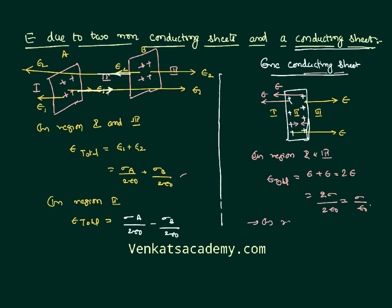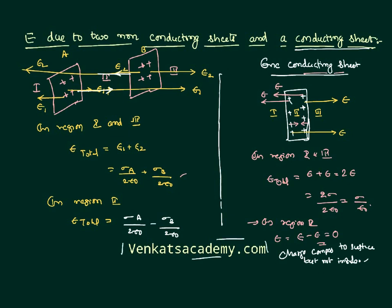In region 2 the field is zero, meaning there is no free charge inside the conducting sheet — charge always comes to the surface, not inside. This applies to a conducting shell or any conducting body. This is referred to as the shell theorem, which states that a conducting body will not have free charges inside; they come to the surface of the body. Thank you.